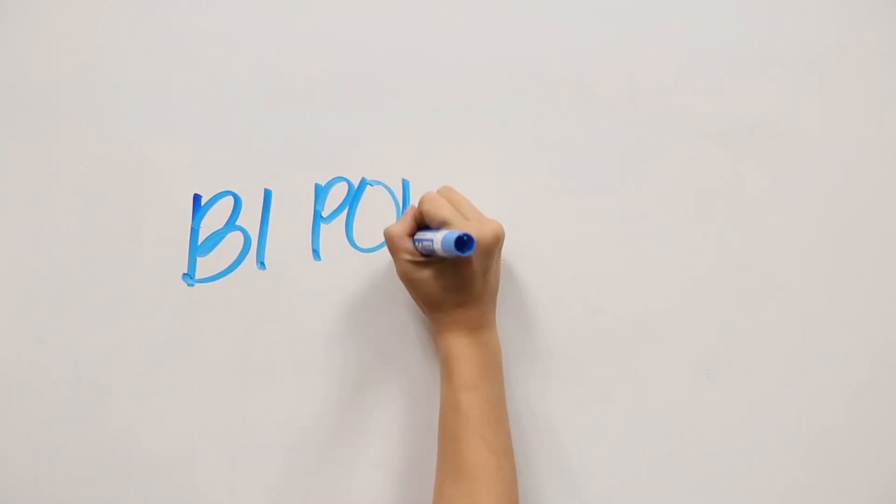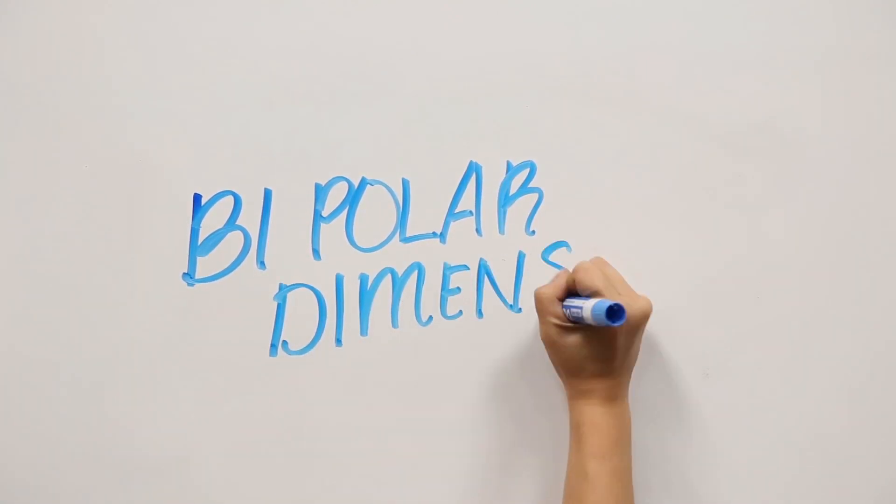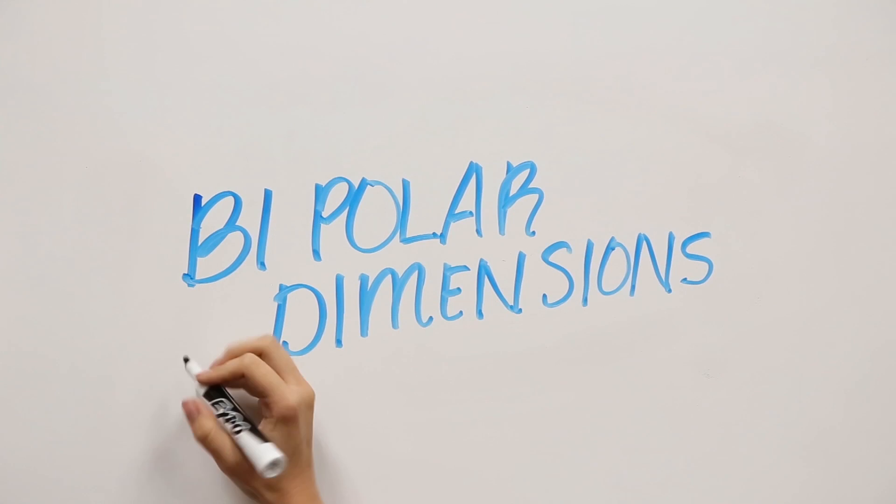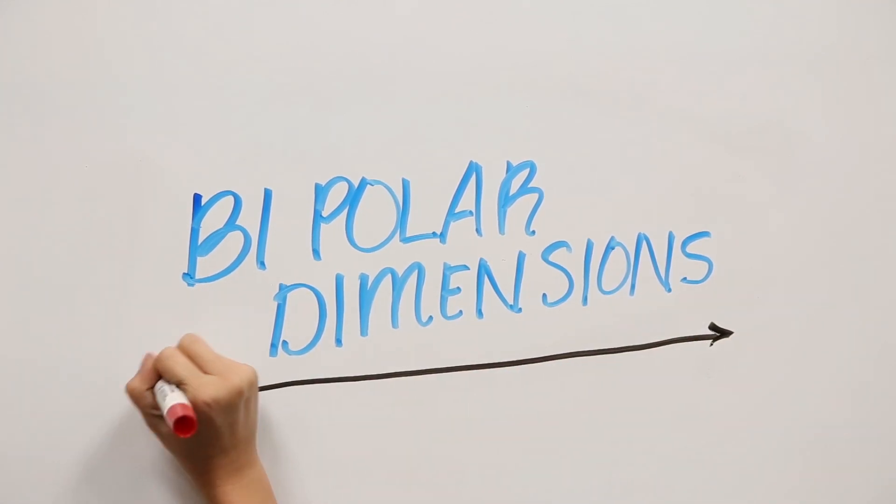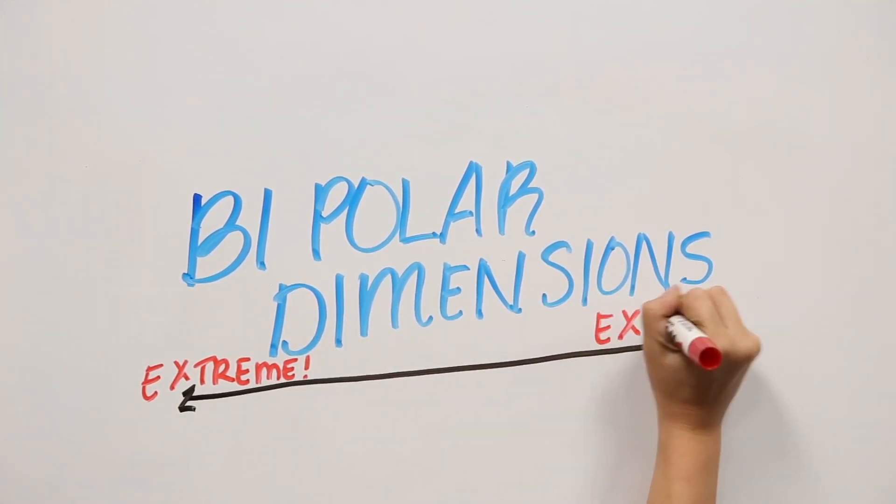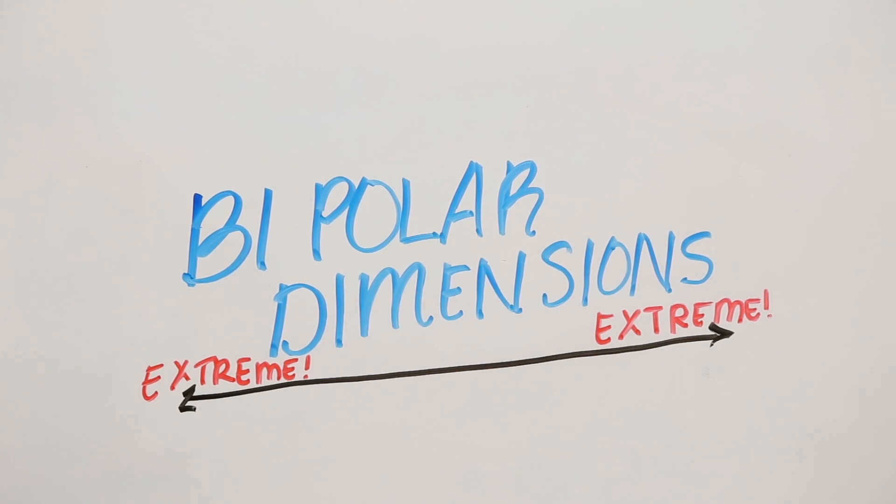It's important to remember that these are all bipolar dimensions, meaning that the characteristics we've described here are only two extremes lying on opposite ends of a continuous spectrum that includes different variations and degrees to which someone is introverted, conscientious,